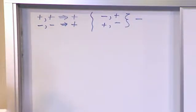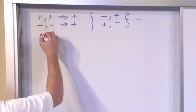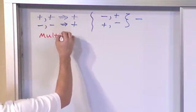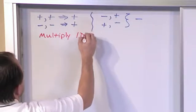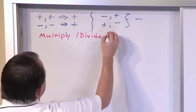So these are the rules of multiplying and dividing. This is how to multiply and divide real numbers.